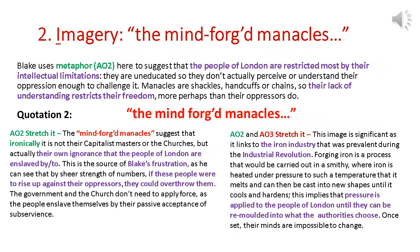For the next key point about London we're going to look at some of the imagery used. One of the metaphors that I'm guessing all of you will have looked at with your teachers is 'mind-forged manacles'. Manacles are shackles or handcuffs or chains. What Blake is suggesting through that metaphor is that the people of London, the working classes, are restricted in their thinking. The main reason for that restriction is their intellectual deficiencies — most of them are uneducated, so they're not actually aware that they're being oppressed or downtrodden.